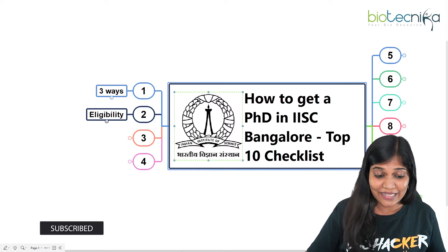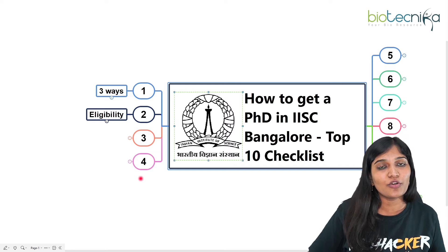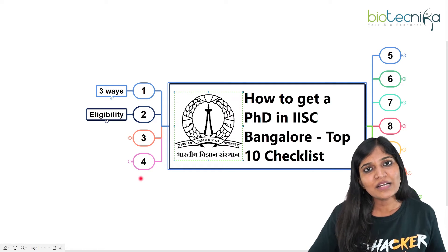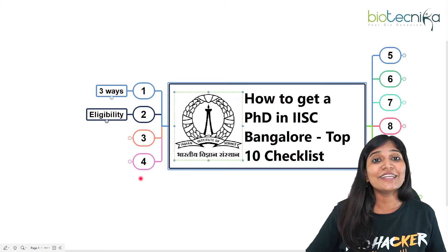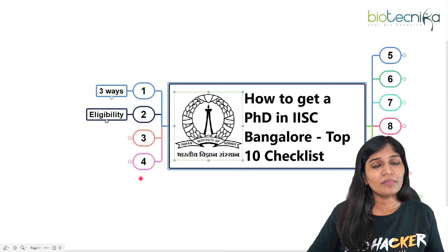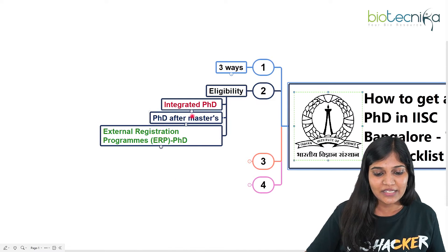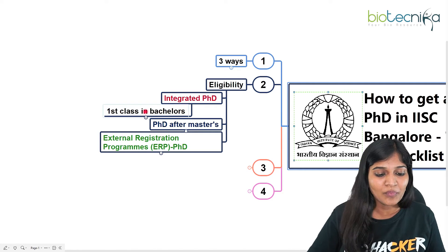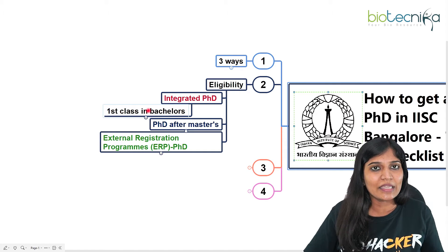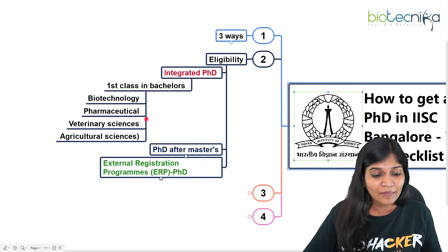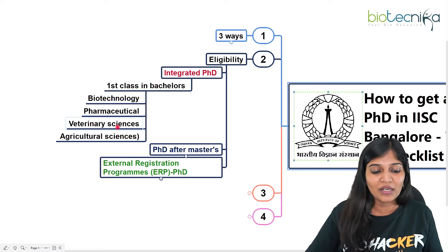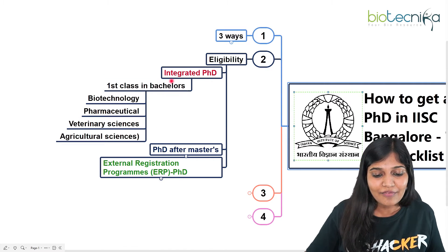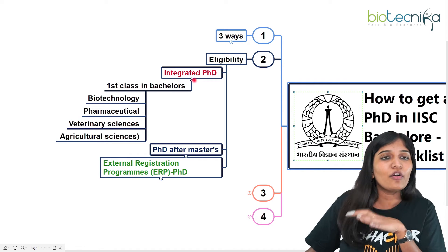The second checklist item is eligibility. For the Integrated PhD — if you want to join after your bachelor's — you need to have a first class in your bachelor's degree, whether it's B.Tech or B.Sc. If you're from Biotechnology, Pharmaceutical Sciences, Veterinary Sciences, or Agriculture Sciences, you need a first class grade. I'll also talk about the required examinations separately.